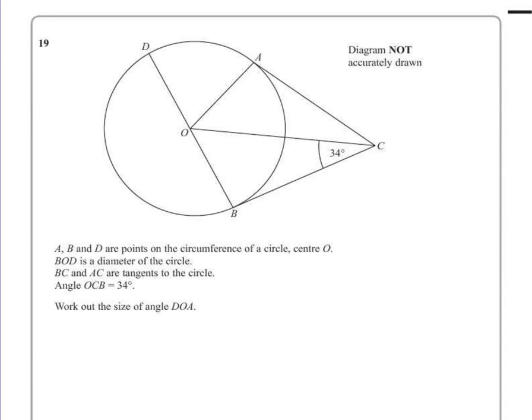A, B and D are points on the circumference of a circle, centre O. BOD is the diameter of the circle. BC and AC are tangents to the circle.